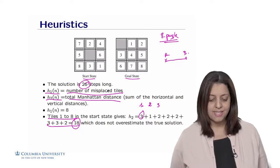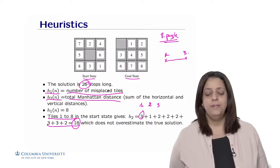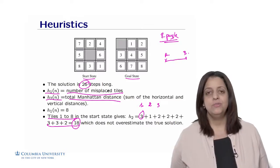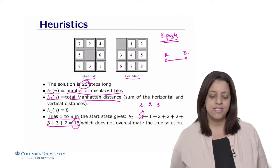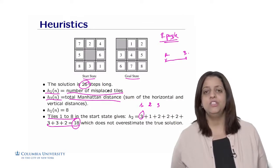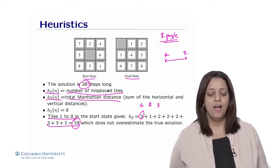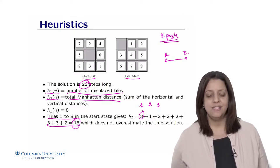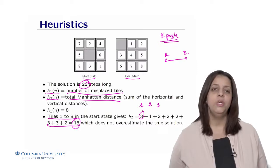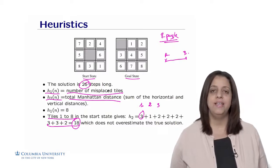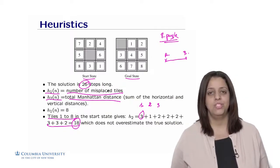In other applications, you may need to find or engineer combinations of heuristics. But in all cases, as long as the heuristic is admissible, you can use it in A* and reach the optimal solution.